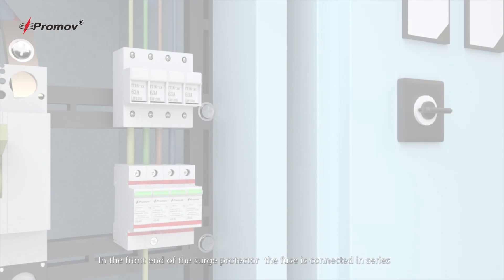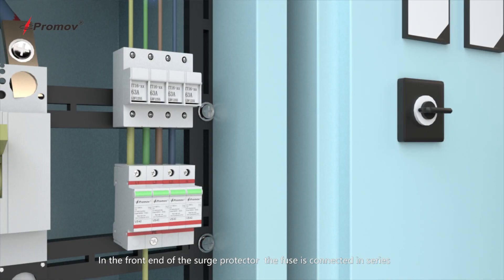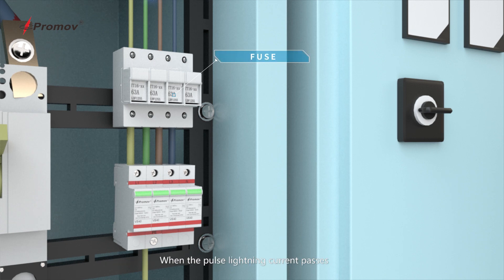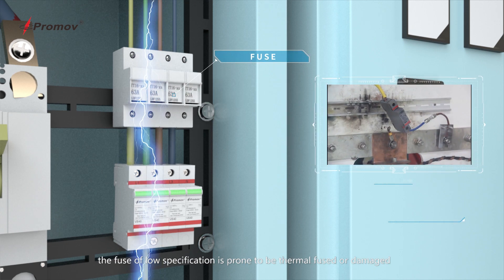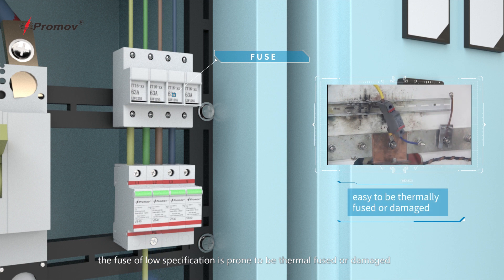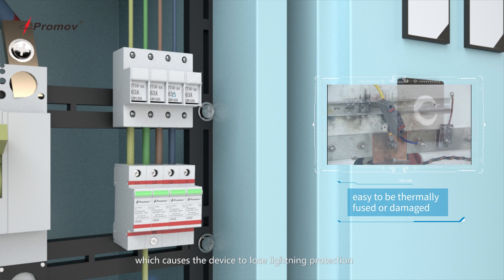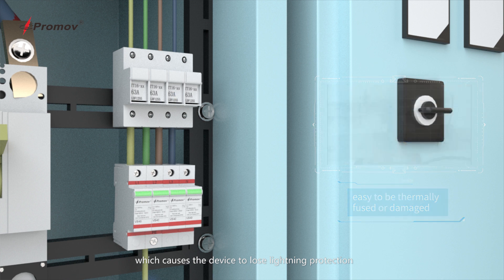When a fuse is connected in series at the front end of the surge protector and a pulse lightning current passes, a fuse of low specification is prone to thermal fusing or damage, which causes the device to lose lightning protection.